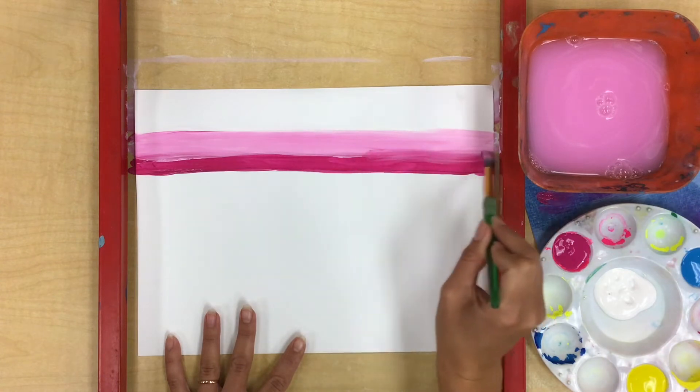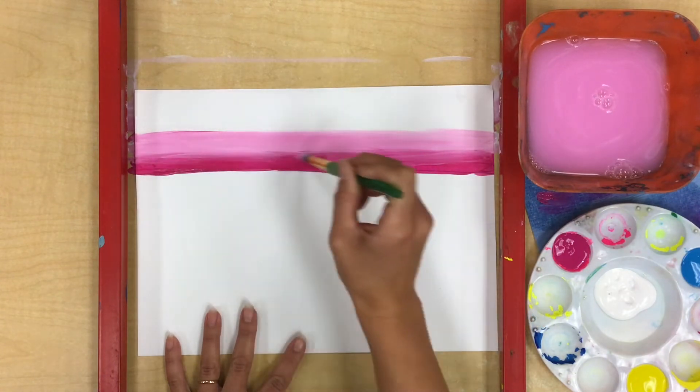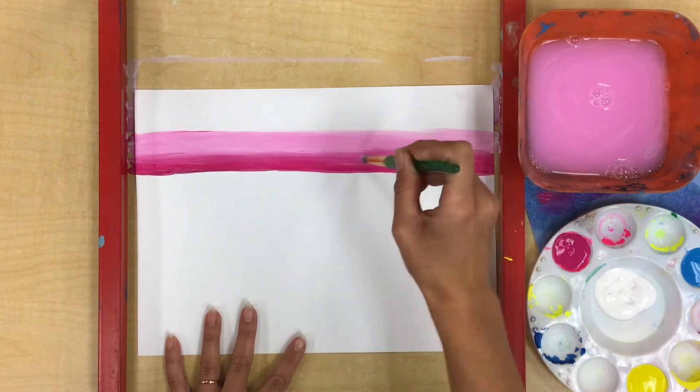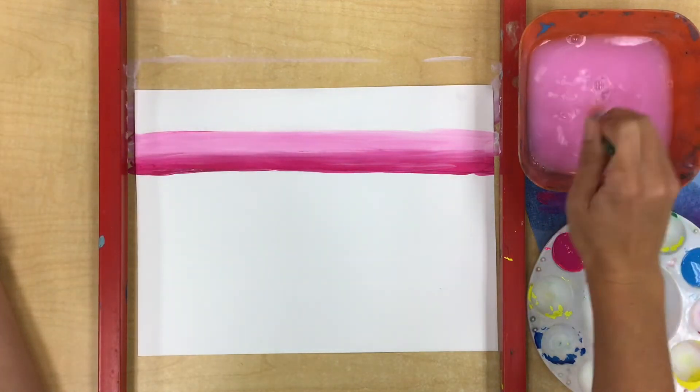I'm going to blend into my first color just a bit. You don't have to blend it in but I kind of like the way that looks when it's a little bit more blendy between the two different colors. All right now I'm ready for my last section.